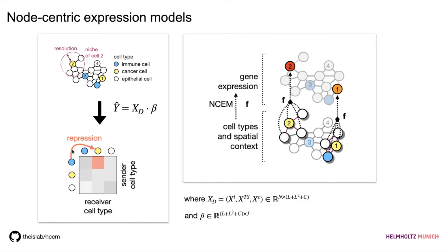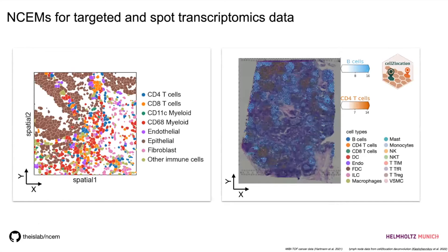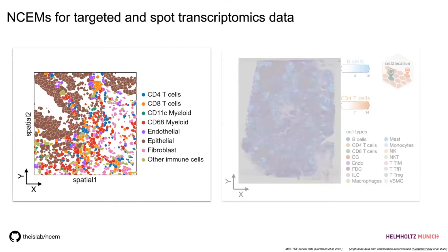The results we obtain are quite similar to differential expression analysis — we just relate to the neighborhood structure and communication events to potentially gain insights. Node-centric expression models are applicable to both targeted spatial transcriptomics data and spot-based transcriptomics data, which makes them quite unique in their application field. I will now go into the targeted case where we have single segmented cells and want to assess plausible communication events.